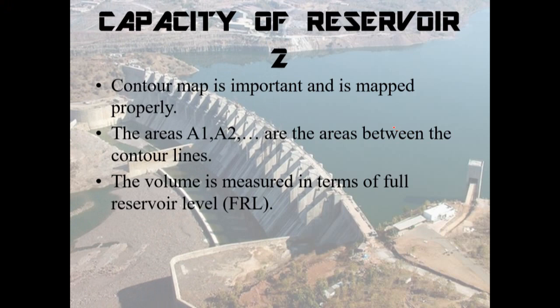Capacity of reservoir, continued. The contour map is very important and must be mapped properly and carefully. As mentioned before, A1 and A2 are the areas between the contour lines. The volume is measured in terms of full reservoir level.